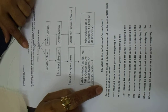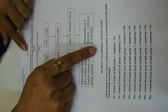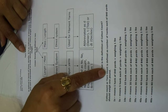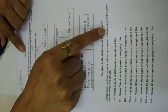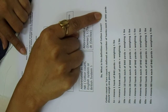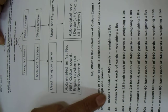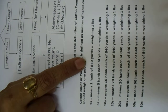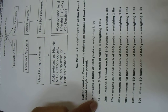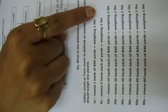Cotton count is the indirect system used to calculate yarn count for spun yarns. It is defined as the number of hanks, each of 840 yards, that weigh one pound. A hank is a coil of yarn measuring 840 yards. If the yarn count is 1s, one hank of 840 yards weighs one pound. If the count is 5s, five hanks each of 840 yards weigh one pound.